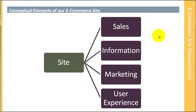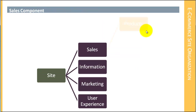By far the most complex portion of the site is going to be the sales portion. The sales portion first includes our products, and in particular our product definition — what are the elements of the product, what are the variations of the product, and what are the different parts of the product that we're going to display in what context?